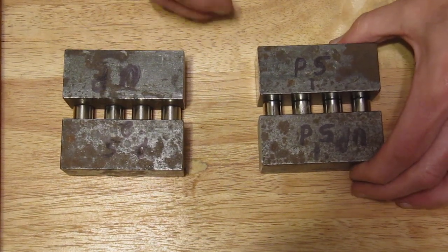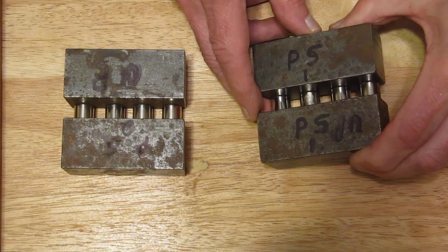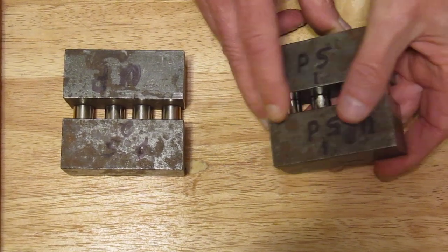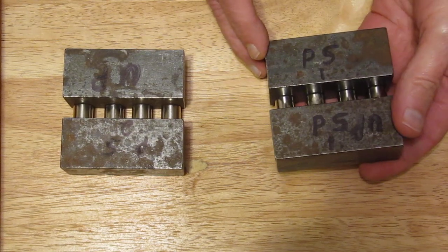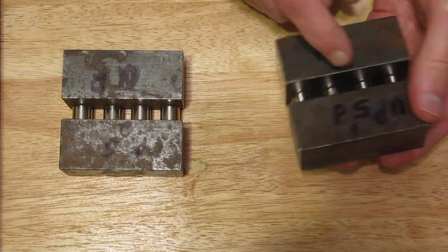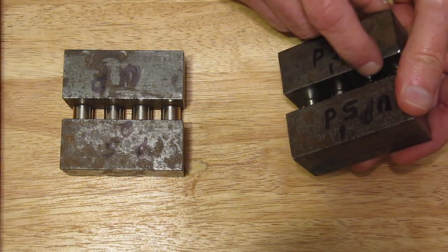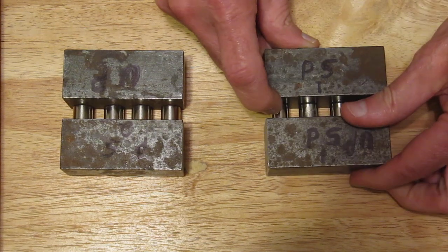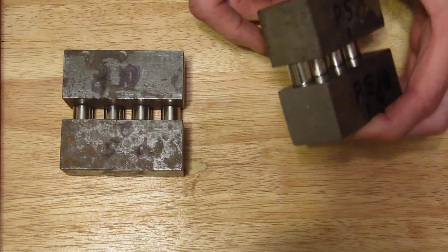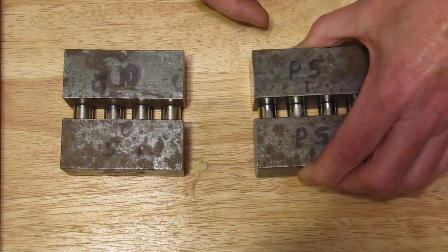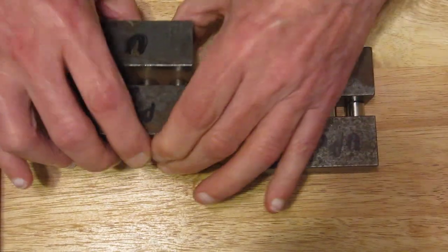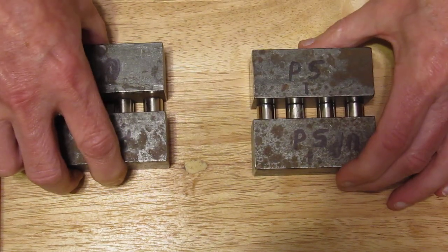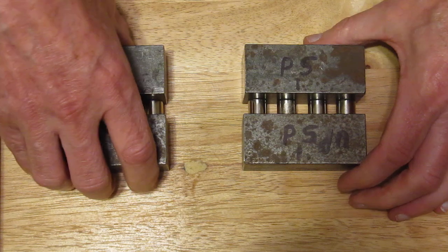Alright, what I've got here is a pseudo solid over unity test. Here I have two 1-inch square 1018 bars with four half-inch NIB magnets, neodymium iron boron magnets. Let you get a look - four here and four here. These are arranged in attraction.